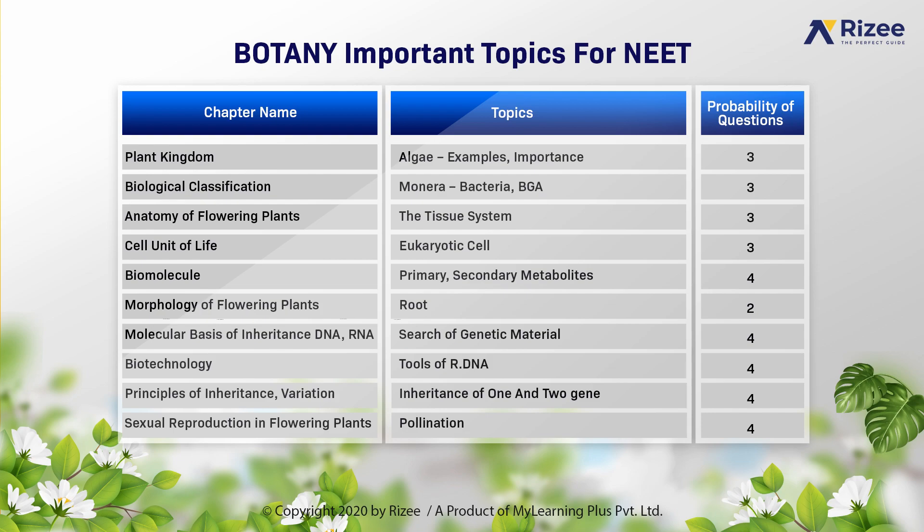In cell unit of life, important topic is eukaryotic cell. Probability of questions are 3. Coming to the chapter of biomolecules, important topics are primary and secondary metabolites. Probability of questions asked are 4. Moving on to the chapter of morphology of flowering plants, important topic is root — two questions could be asked. Next, molecular basis of inheritance chapter, important topics are search of genetic material, i.e. DNA and RNA. Probability of questions are 4.